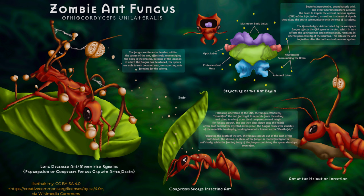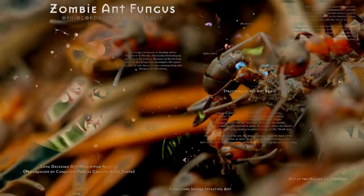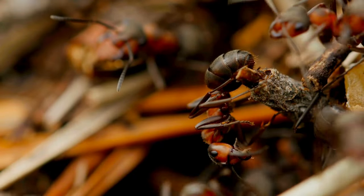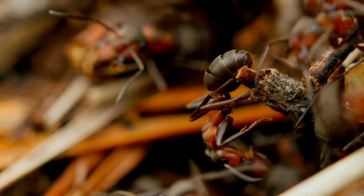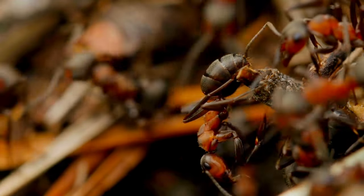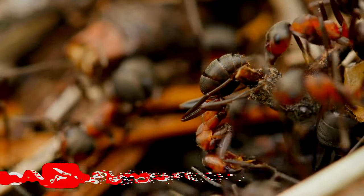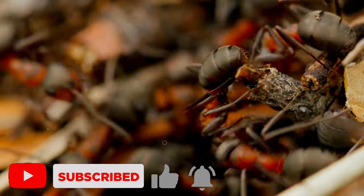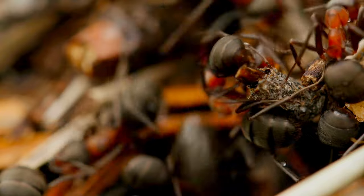To summarize, we've seen how the parasitic fungus Ophiocordyceps unilateralis manipulates the behavior of its host ants and how it's evolved a range of complex strategies to ensure its own survival. We've also looked at the fascinating life cycle of this parasite and explored some of the surprising implications of its existence. Thanks for joining me on this journey into the wild world of zombie ants. Leave your thoughts in the comments below, and be sure to subscribe, like, and hit that bell icon. Until next time, stay curious.